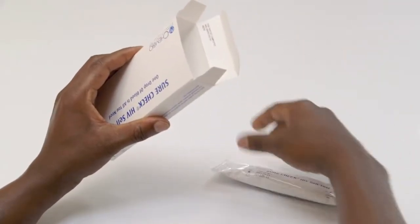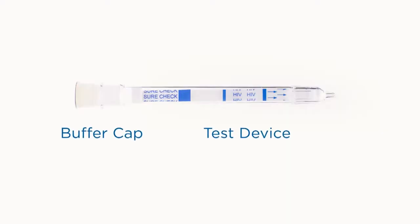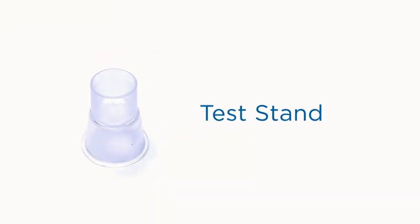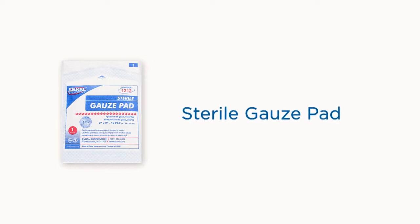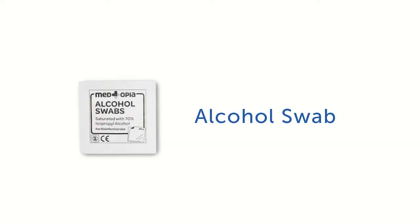The SureCheck HIV self-test contains the buffer cap and test device, bandage, safety lancet, test stand, sterile gauze pad, and alcohol swab.